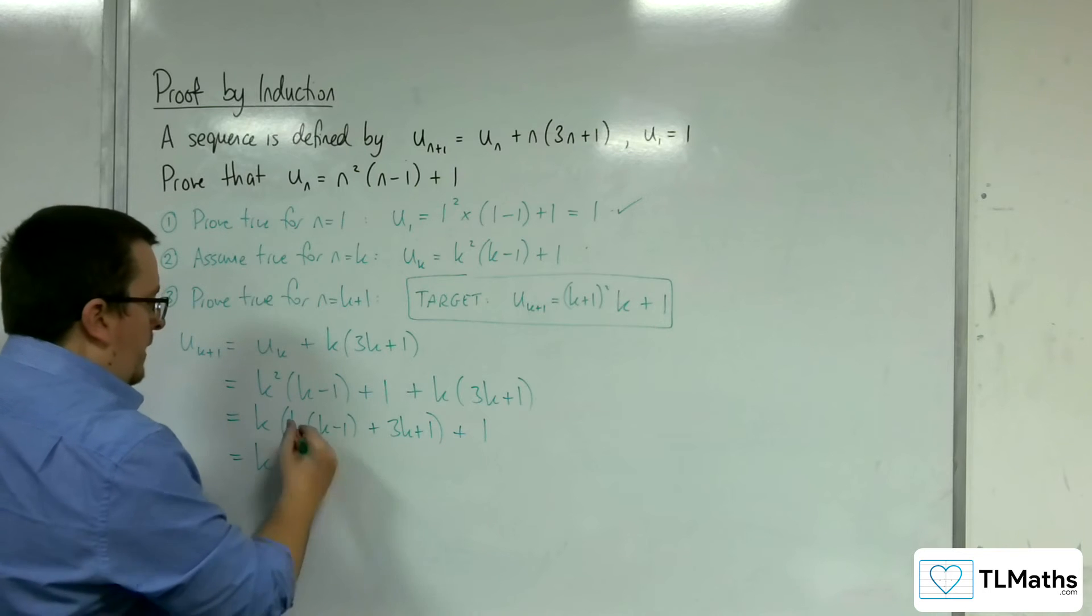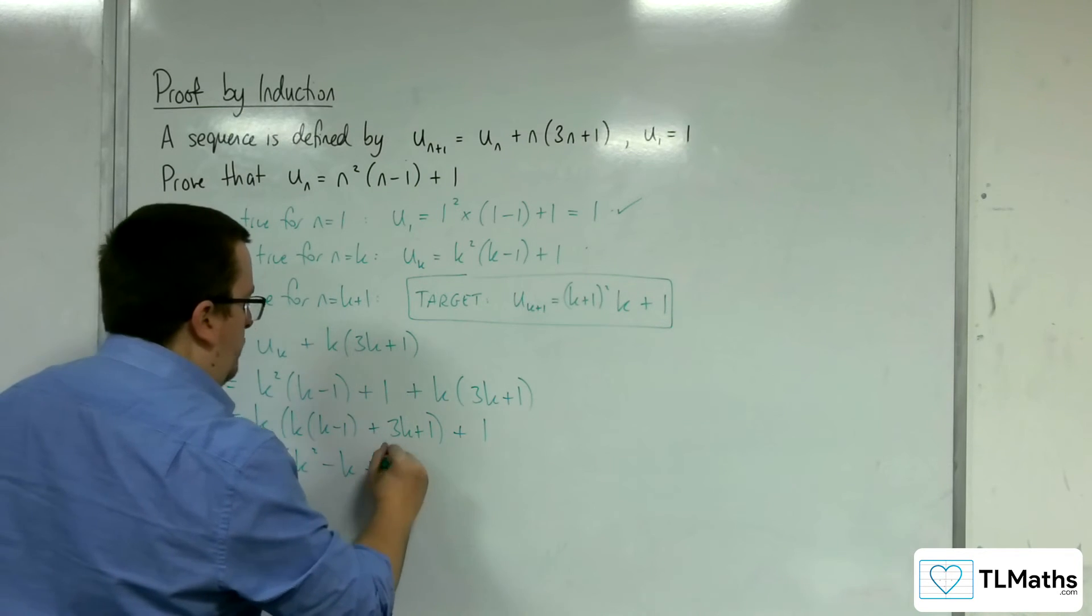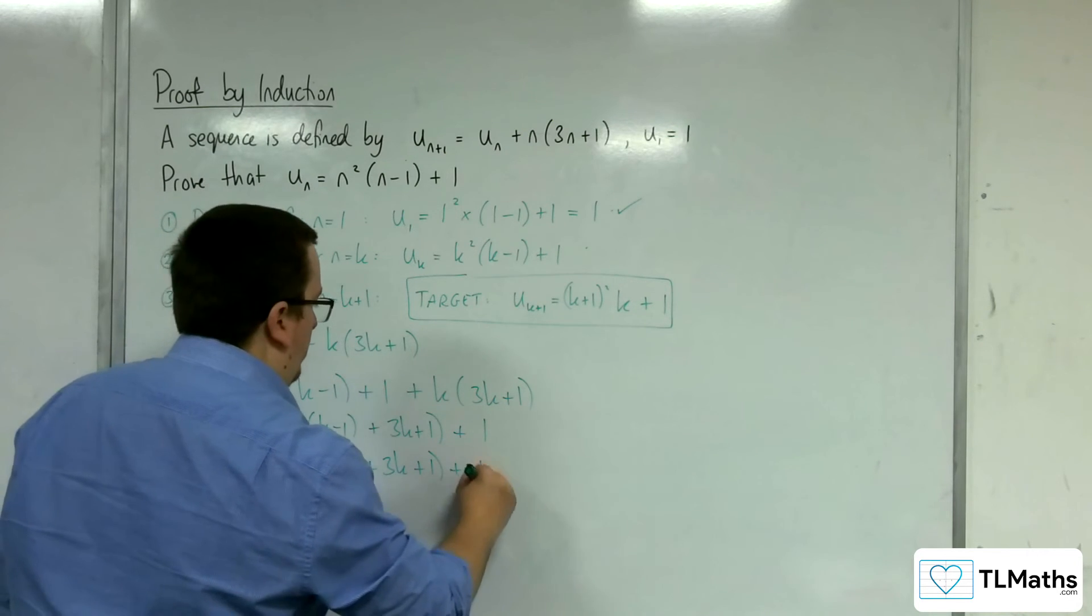So I've got the k. From here, I've got k² take k, plus 3k, plus 1. Plus 1.